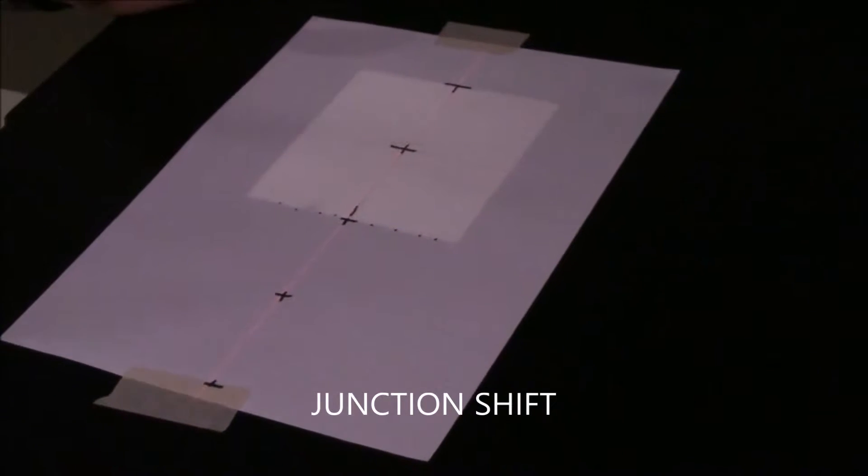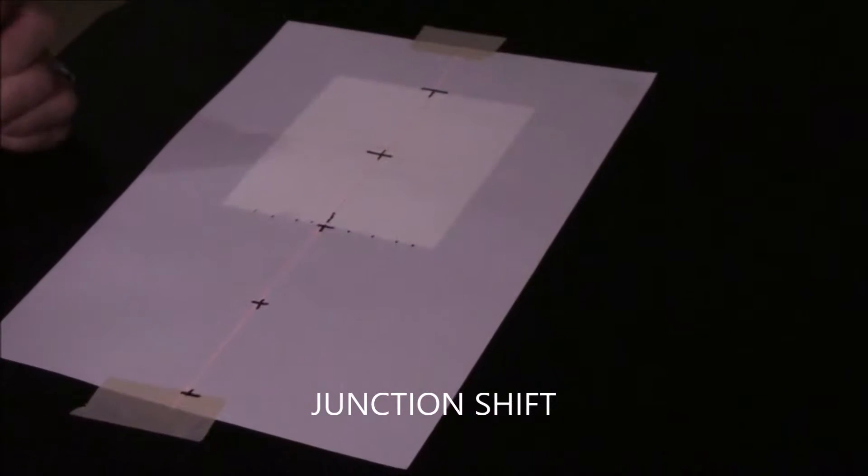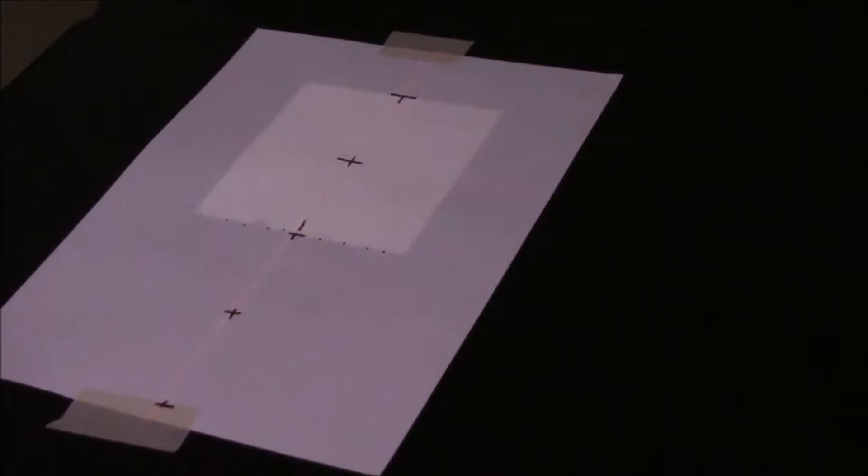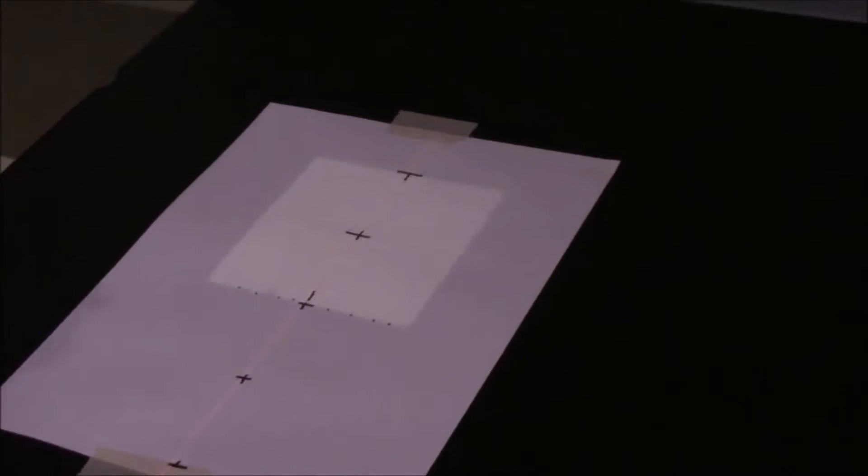I'm going to demonstrate junction shift. We have two 10 by 10 field sizes set with a gap, just a straight gap in between.